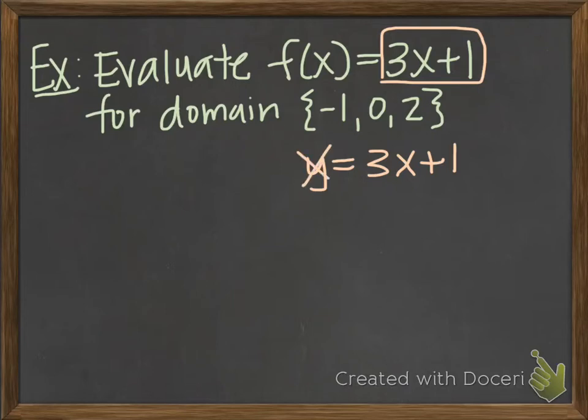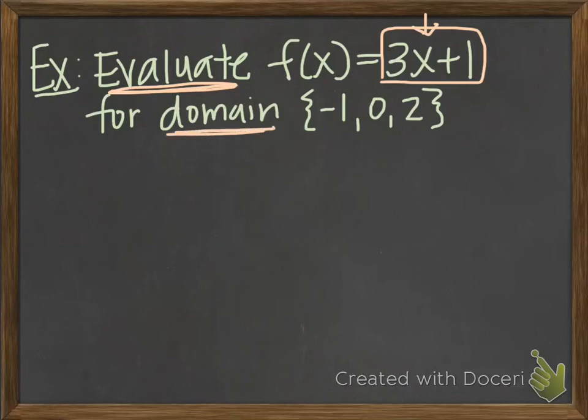We're taking out the y part and putting f of x in its place. So the 3x plus 1 is how we get the outputs from the inputs. It's called the function rule. So we're going to evaluate it. Evaluate means take your x values and replace them with numbers and then simplify. And the x values that we're going to use are found in this given domain. So remember domain, those are my x values and here are my possible x values.